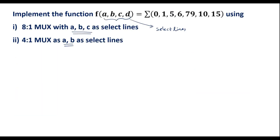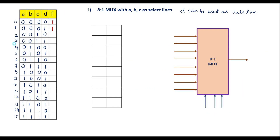The given minterms are 0, 1, 5, 6, 7, 9, 10, and 15. For these minterms the output function F is 1 or high. For all other cases the output value is 0. This completes the truth table with respect to the given function.